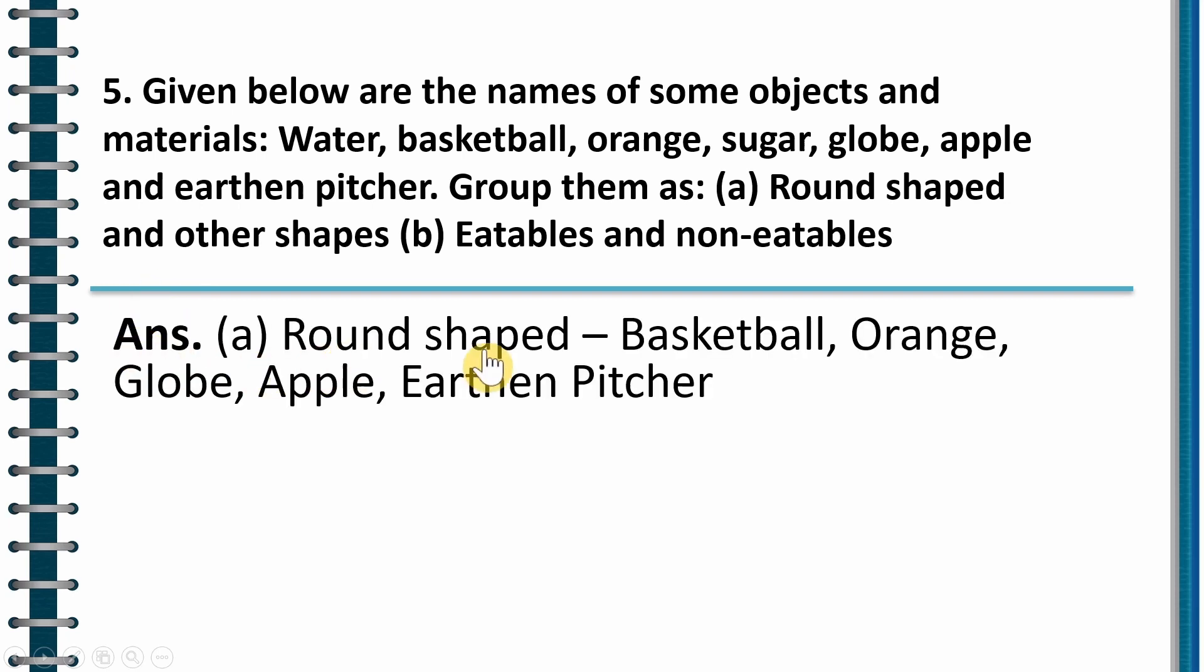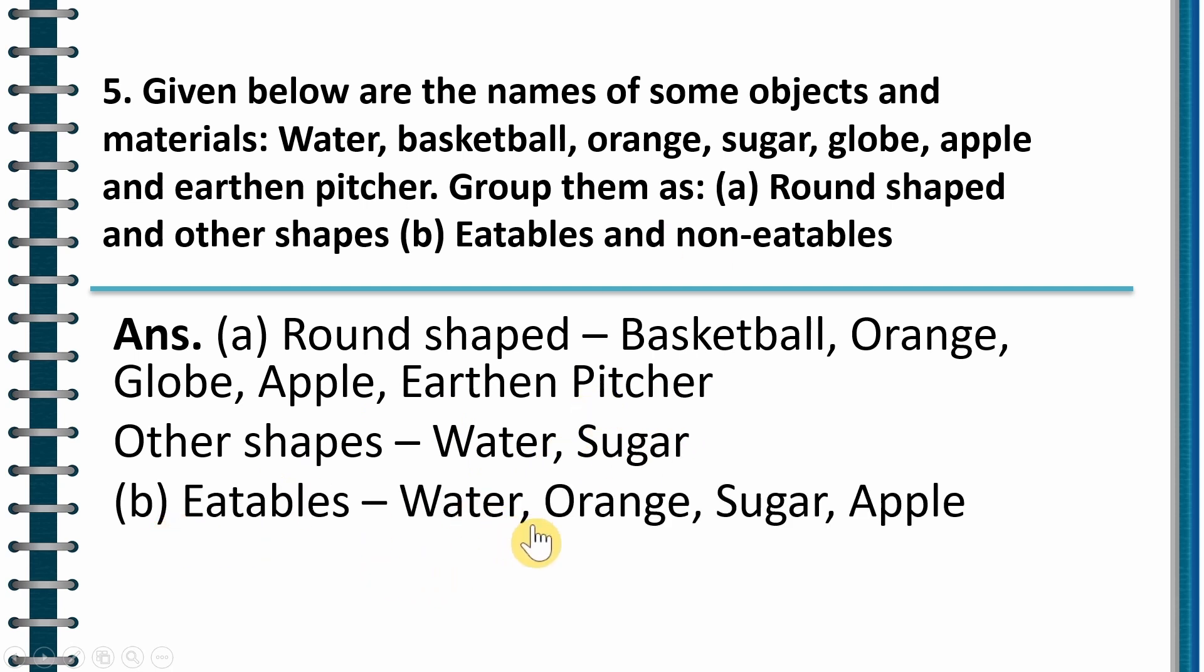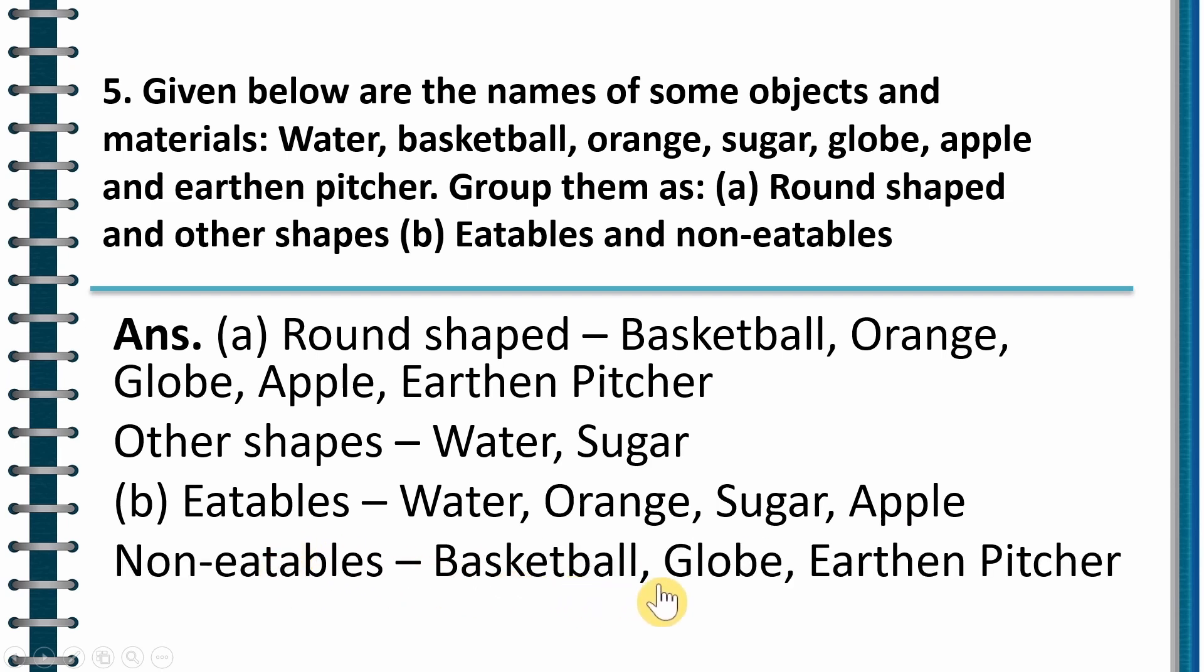The answer to this question is, under round shape, you will find basketball, orange, globe, apple, earthen pitcher. While other shapes, you will find water, sugar. Then under eatables, you can put water, orange, sugar, apple. And under non-eatables, you will put basketball, globe, and earthen pitcher.